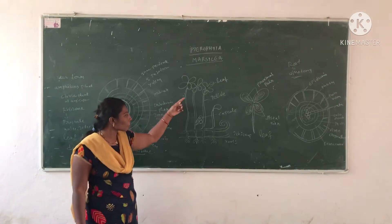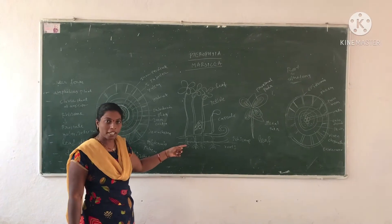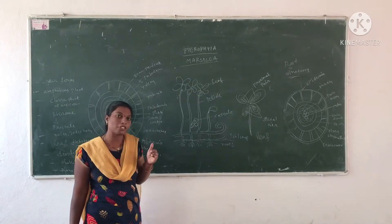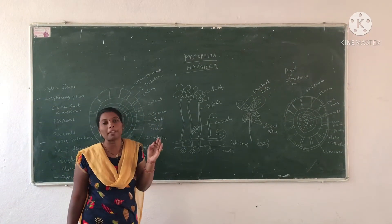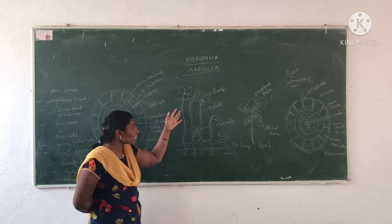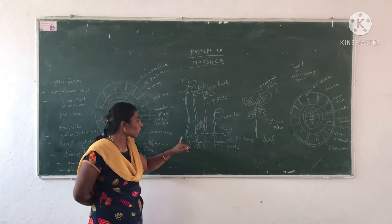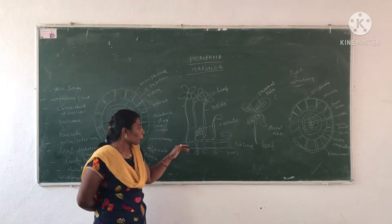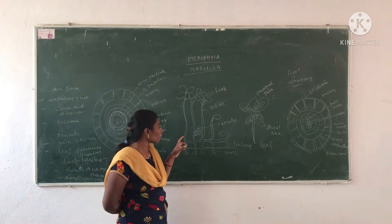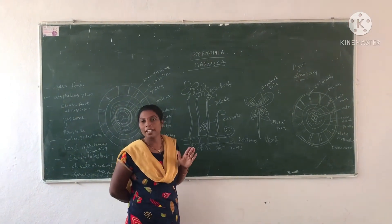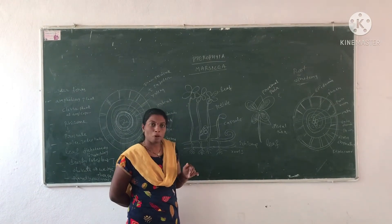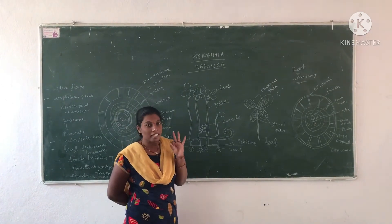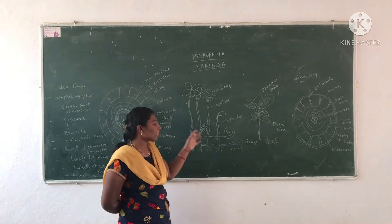First, I want to discuss the Marsilea plant body. Marsilea shows a number of different characters from other Pterophytes. This is a dominant Pterophyte. The Marsilea plant shows an underground rhizome. This underground rhizome is prostrate. The Marsilea plant body is differentiated into three parts: root, stem, and leaf. These three parts can easily identify the plant.